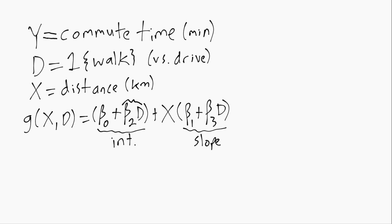So we can sort of imagine one line where d equals 0 and the intercept is beta naught and the slope is beta 1, and then a separate line when d equals 1 the intercept becomes beta naught plus beta 2 and the slope becomes beta 1 plus beta 3.